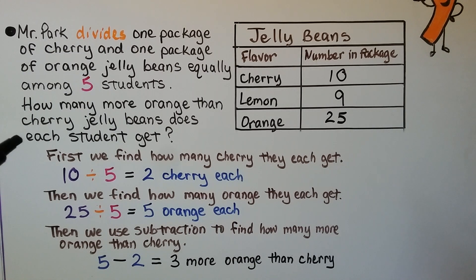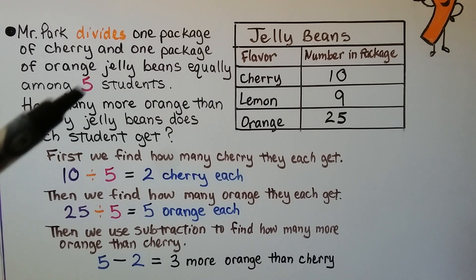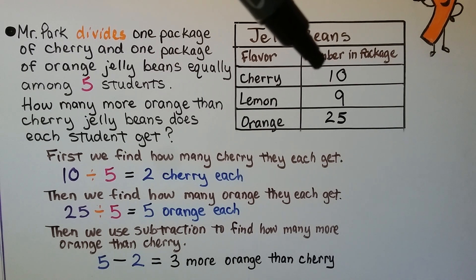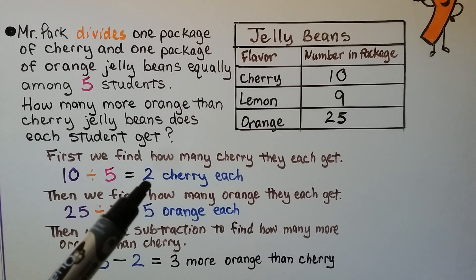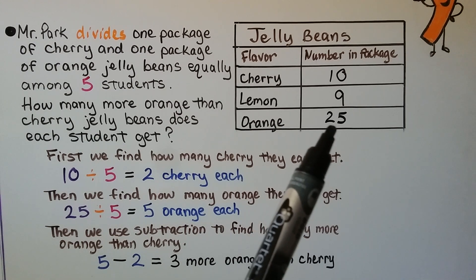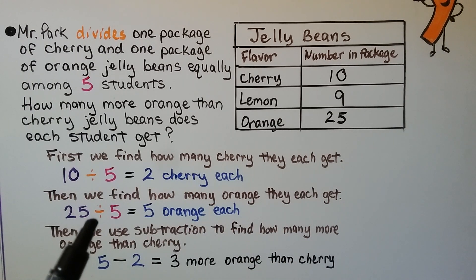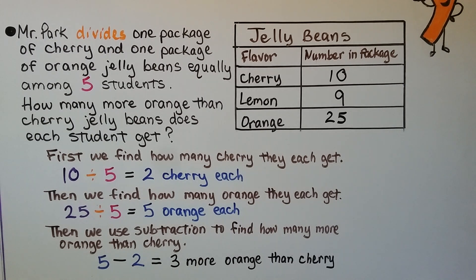We need to find how many more orange than cherry jelly beans each student gets. There are 5 students. First, we find how many cherry they each get: there are 10 cherry in each package, so we do 10 divided by 5, which equals 2 cherry each. Then we find how many orange they each get: there are 25 orange in a package, so we do 25 divided by 5, which equals 5 orange each. Then we use subtraction: 5 orange each minus 2 cherry each equals 3 more orange than cherry.